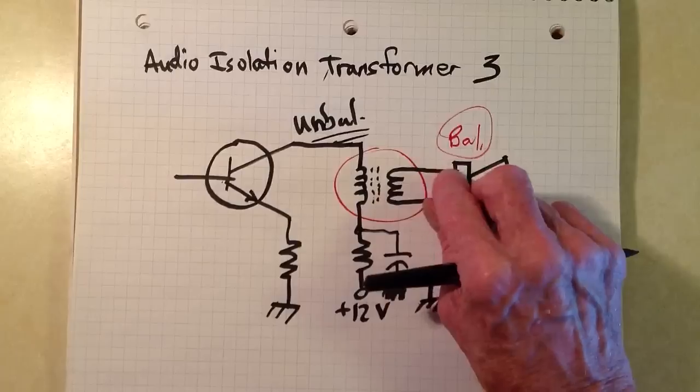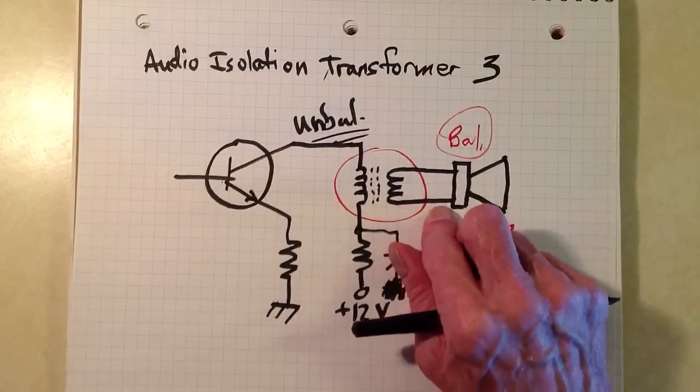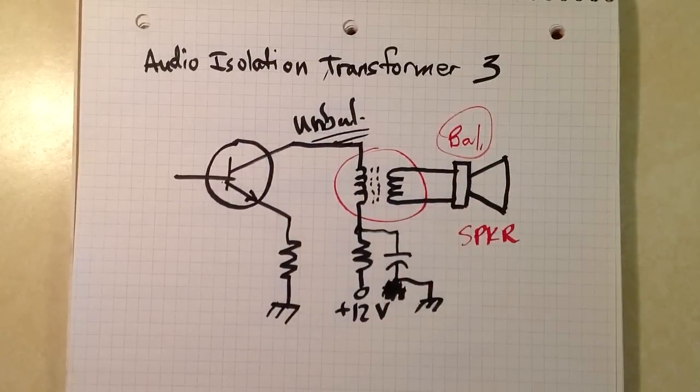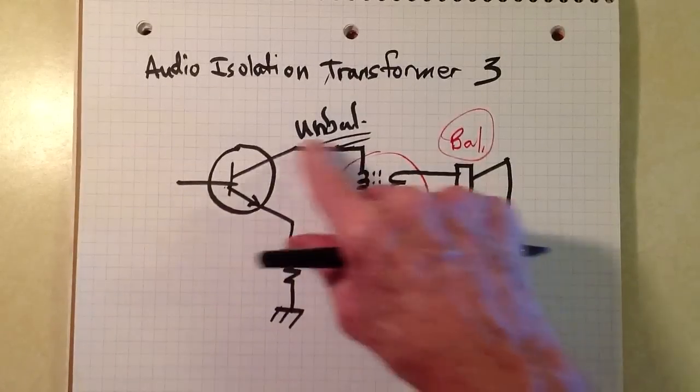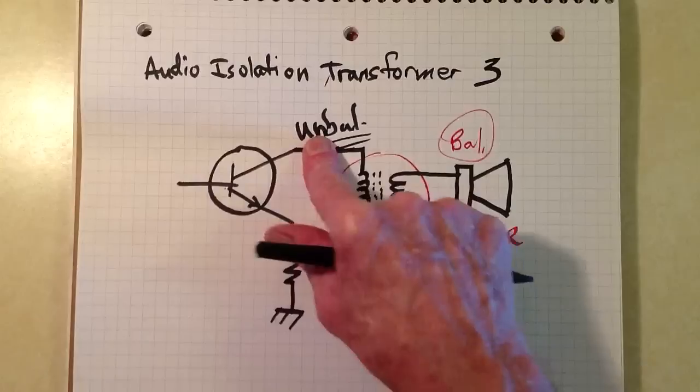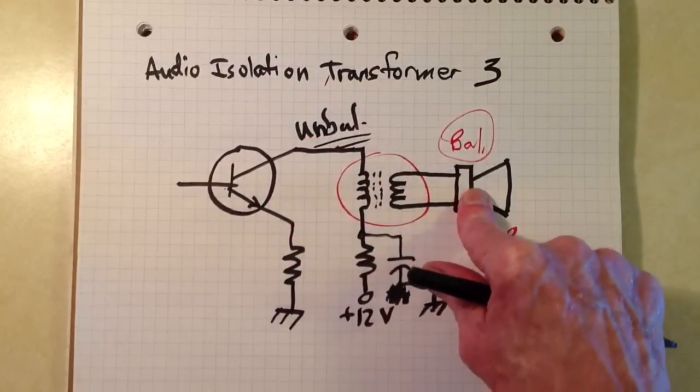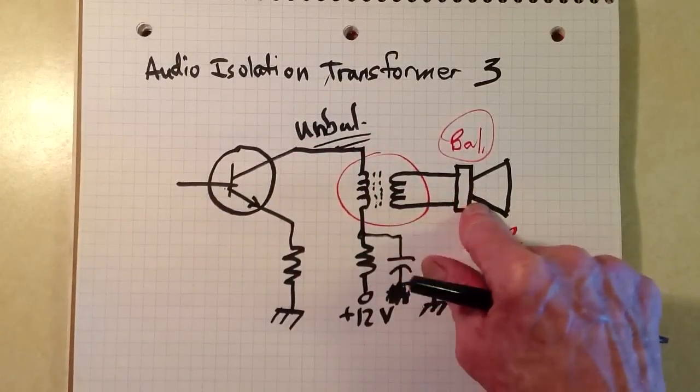So what you want here is something to isolate the unbalanced nature of this side from the balanced nature of this side, and an isolation transformer will do that very well.